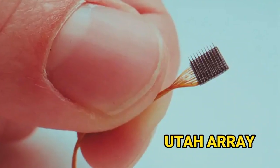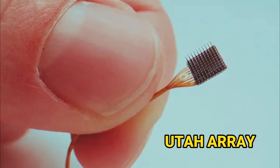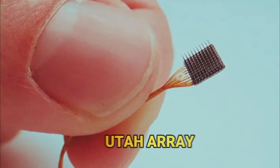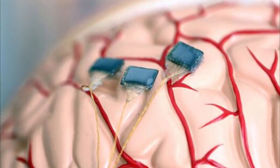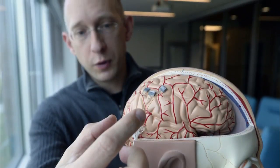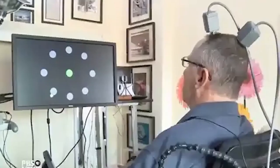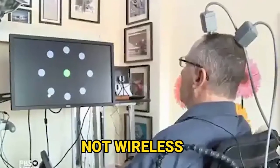The Utah Array has been widely used for invasive brain-computer interfaces, but has limitations. It consists of tiny electrodes implanted into the brain. But here's the catch. It's more flexible than we'd want. Plus, it's not wireless, so there are more convenient options.